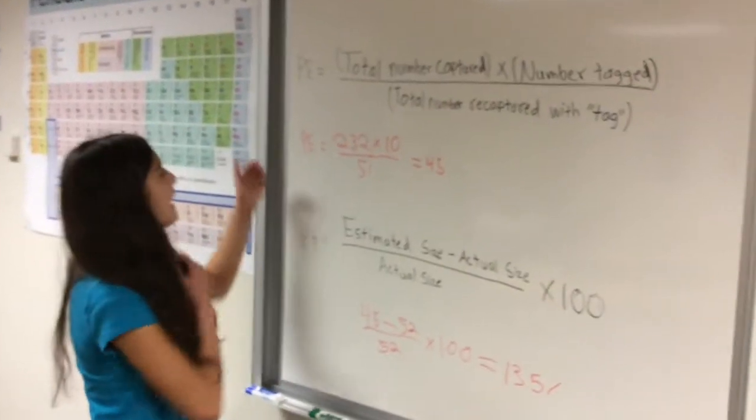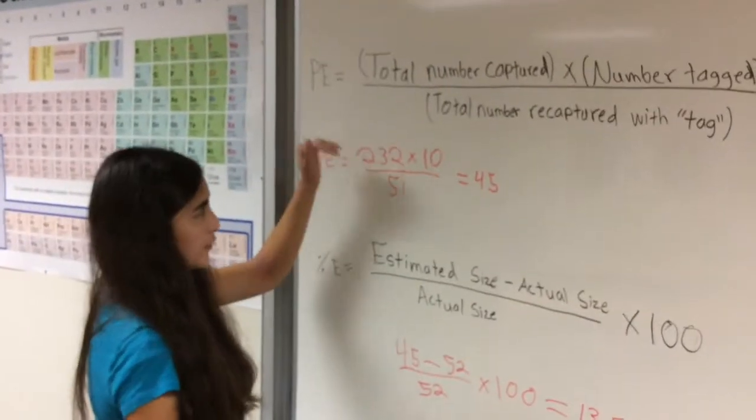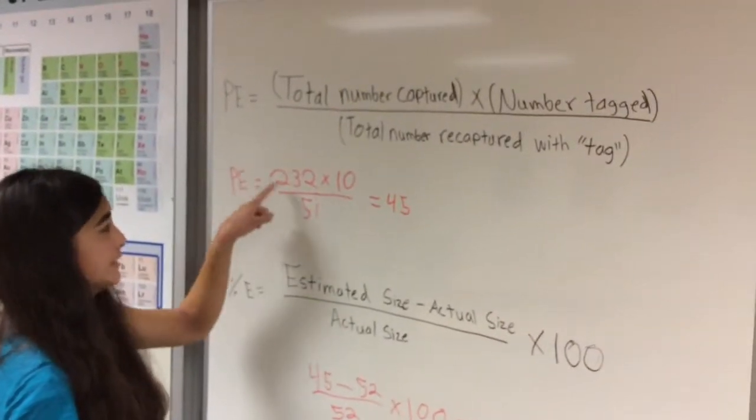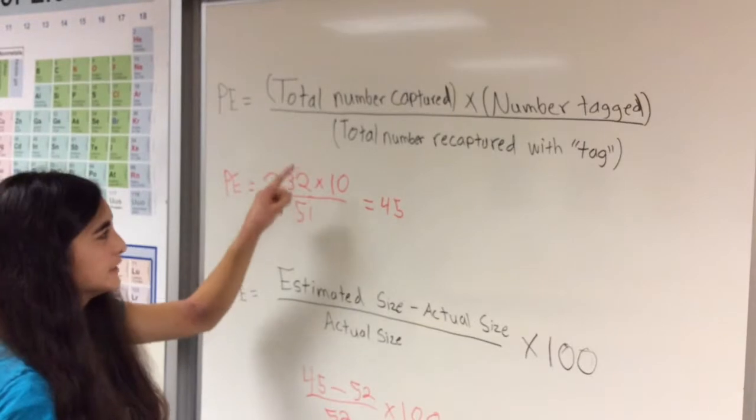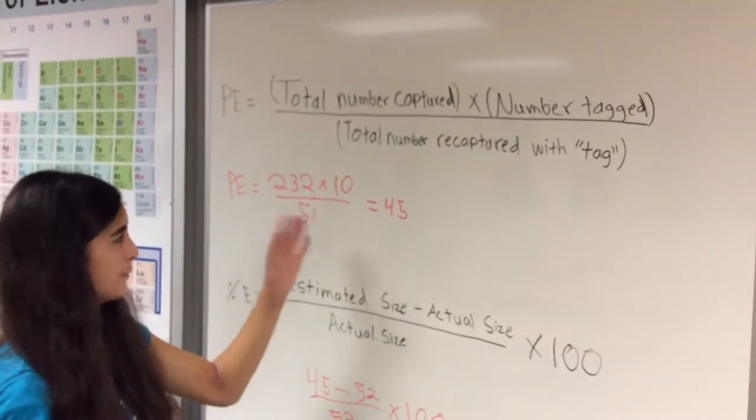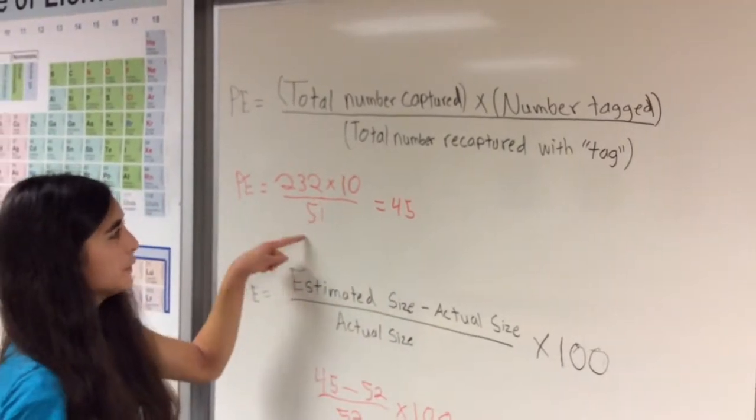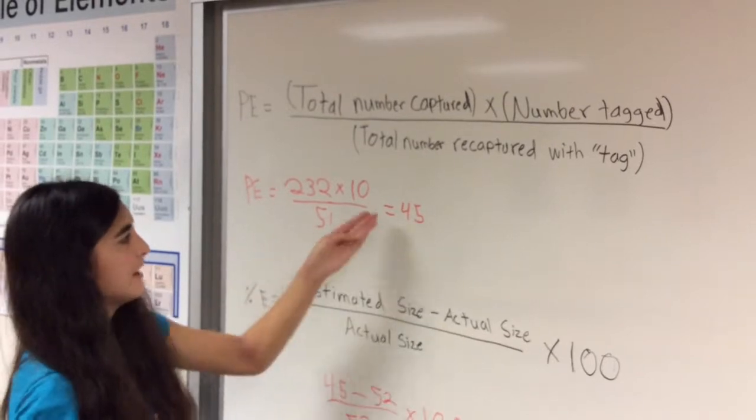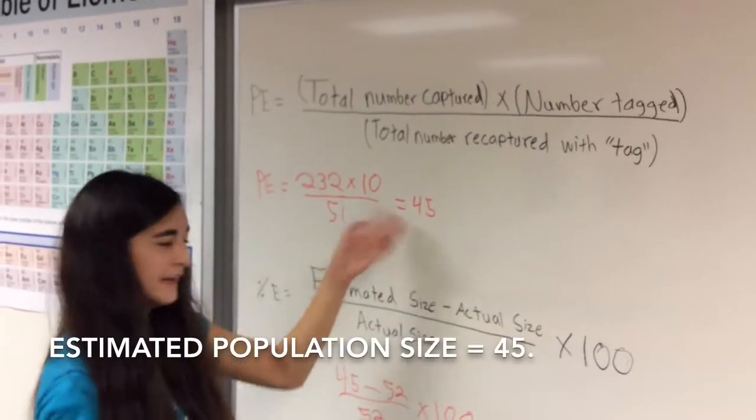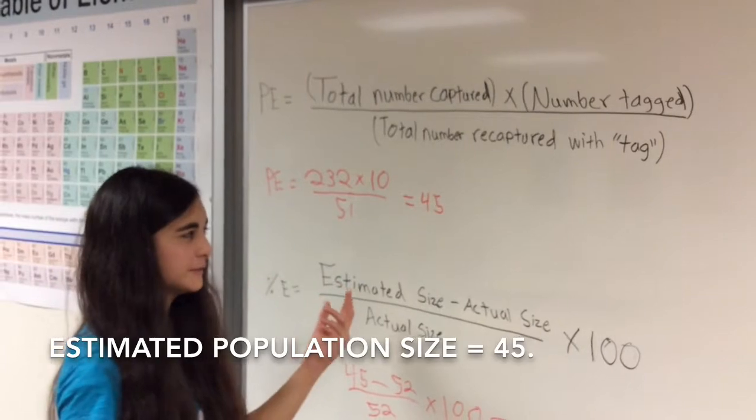With the student we actually had done, she added up all the number captured and it was 232 times it by the 10, which was the 10 brown beans in the bag, divided it by the total number recaptured with the tag, and that ended up being 45. That's what she guessed the population size was.